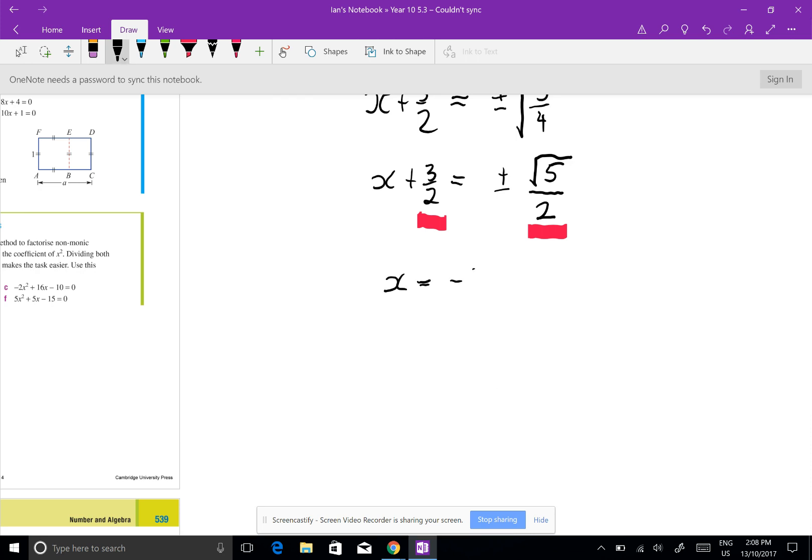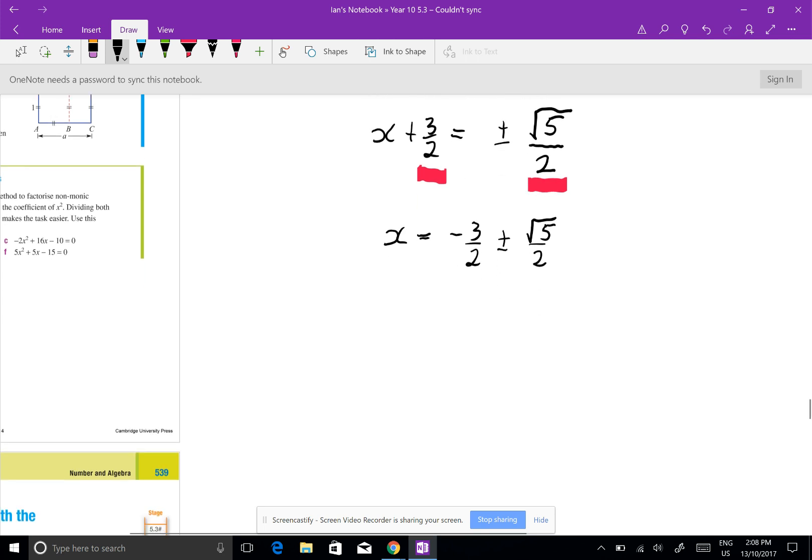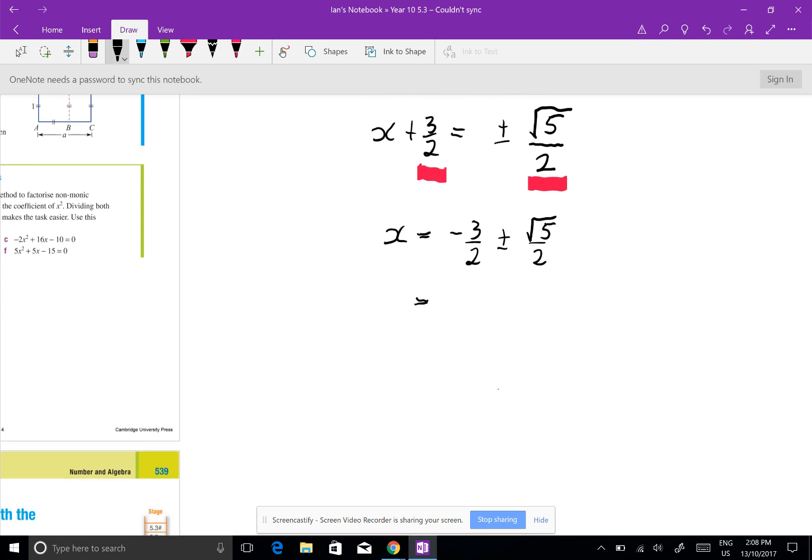It just will happen every time. So now I'm minus the 3 on 2, so I've got minus 3 on 2 plus or minus root 5 on 2. And because I've got a common denominator I can write it all as one fraction: minus 3 plus or minus root 5 all over 2.